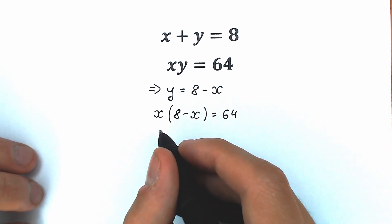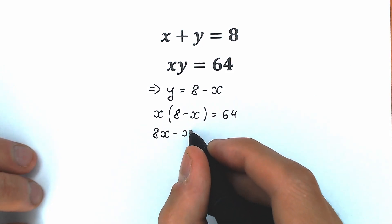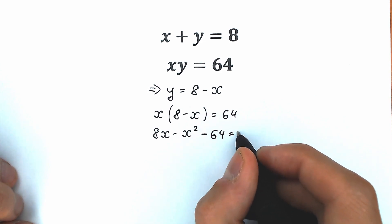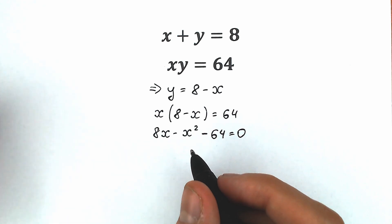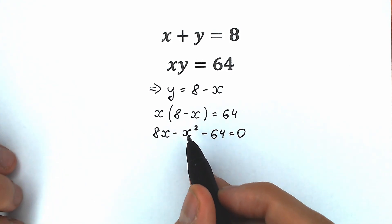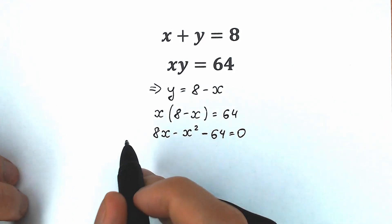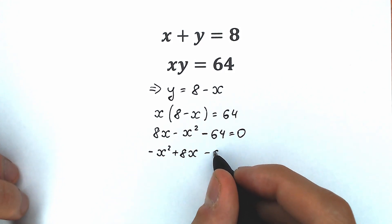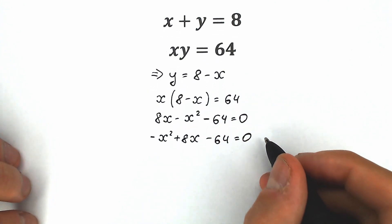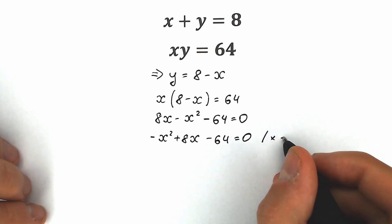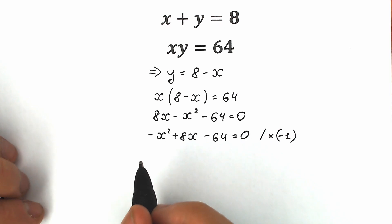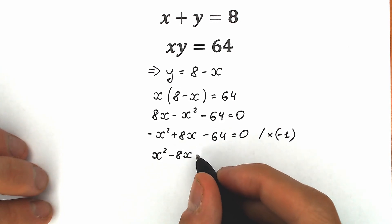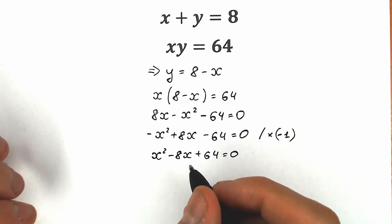Now, basic equation. Let's open our parentheses. We have 8x minus x squared equal to 64. It will be easy when we bring 64 to the left side, giving us minus 64 equal to 0. This looks like a quadratic equation but in a different order — we prefer x squared on the first position. So let's rearrange: minus x squared plus 8x minus 64 equal to 0. Now, the final tricky move — multiply both sides by minus 1 so we have a positive x squared. As a result, we have x squared minus 8x plus 64 equal to 0. This is a classic quadratic equation.